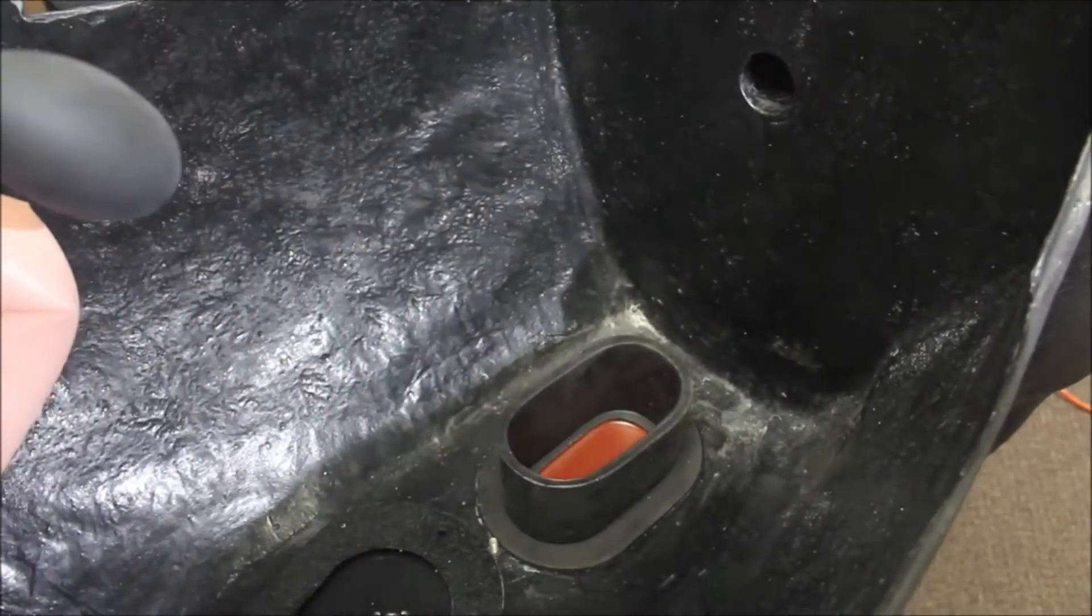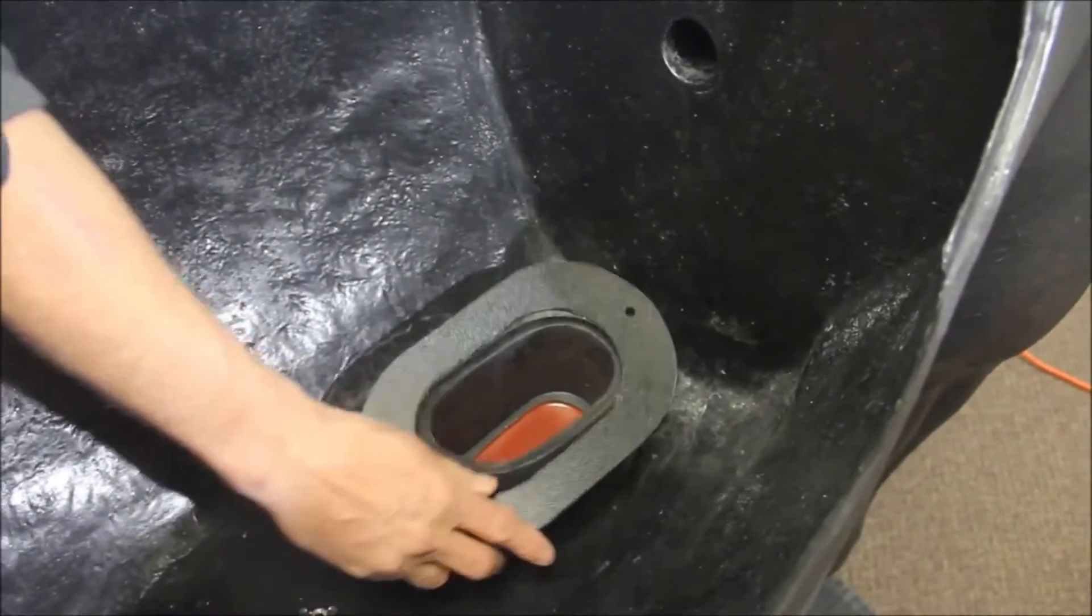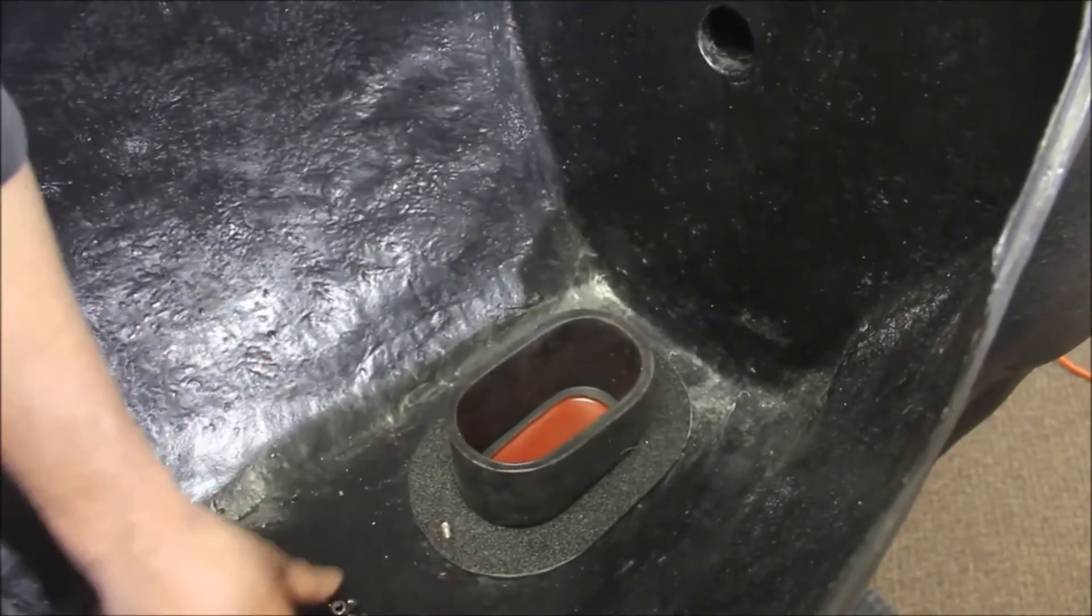It snaps into place and sits flush with the belly of the horse and is held in by a plastic ring and two wing nuts.